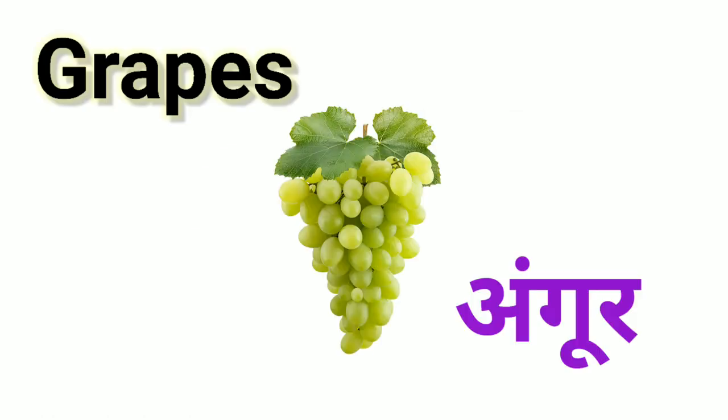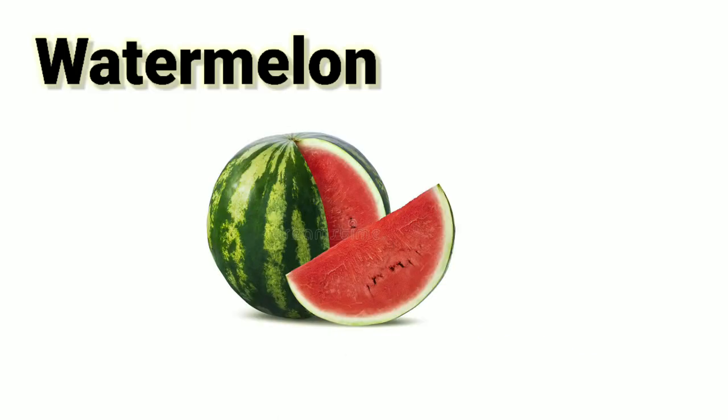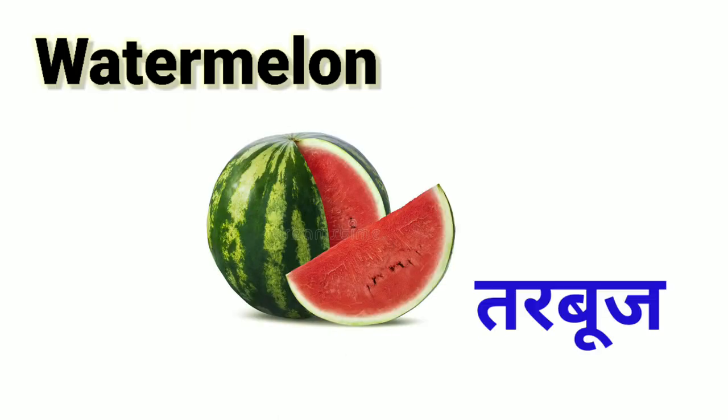Grapes — G-R-A-P-E-S — Grapes. Grapes means Angoor. Watermelon — W-A-T-E-R-M-E-L-O-N — Watermelon. Watermelon means Kharbuj.